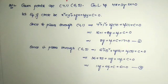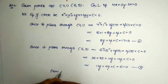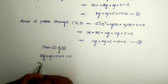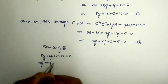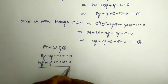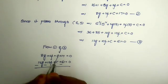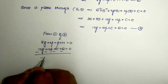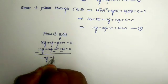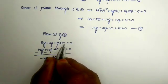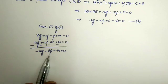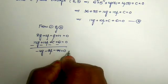Now solving Equations 1 and 2 together. Equation 1: 8g + 2f + c + 17 = 0; Equation 2: 12g + 10f + c + 61 = 0. Subtracting, the c terms cancel. We get 8g - 12g = -4g, and 2f - 10f = -8f, and 17 - 61 = -44. So -4g - 8f - 44 = 0. This is Equation 3.